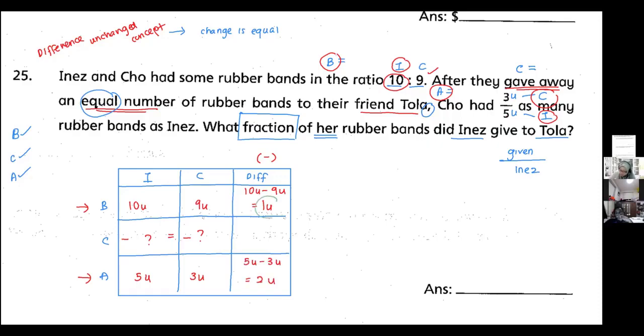Now this difference and this difference—for difference unchanged concept, the before and after units must be the same. You look at that and you know this is not the same, so make it the same first. How? I times 2 here. If I times 2 there, then the whole row of before must times 2.